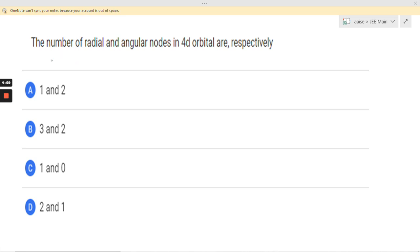Hello everyone, how are you all? So today again we are having a question from JEE Mains 2022 paper and this question reads like: the number of radial and angular nodes in 4d orbitals are respectively.